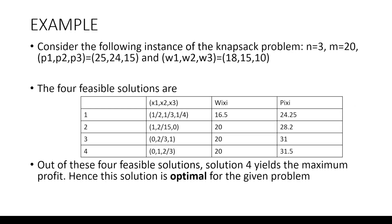Looking at the same example again, we have four feasible solutions and we want the maximum profit with the available weight. Out of the four feasible solutions, the one giving the maximum profit is 31.5. So the fourth feasible solution is the optimal solution for the given problem.